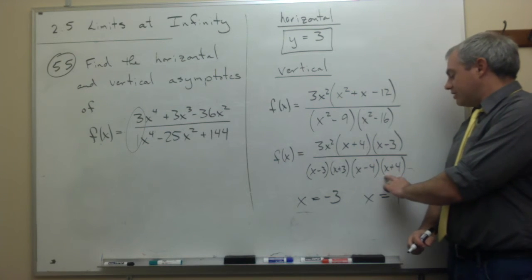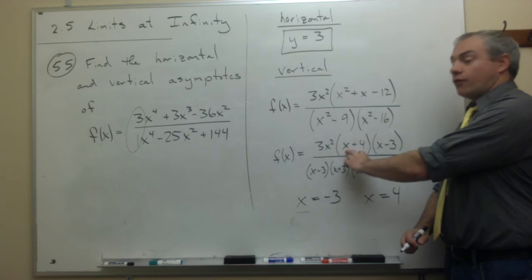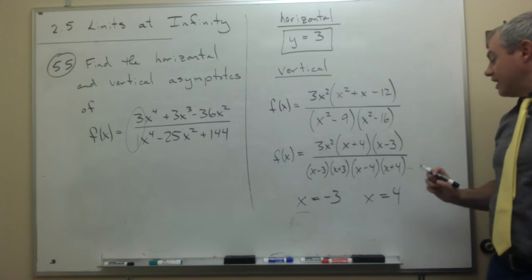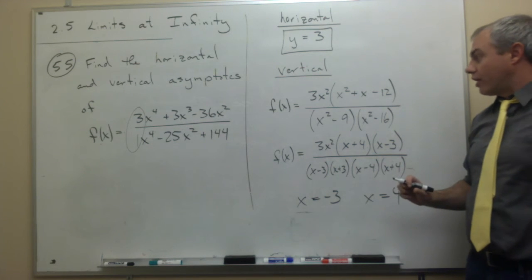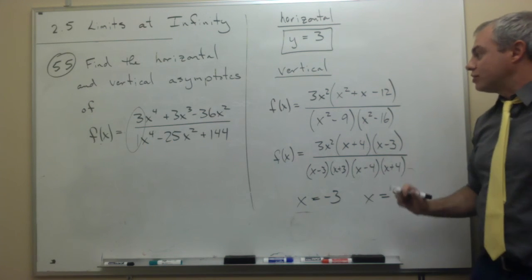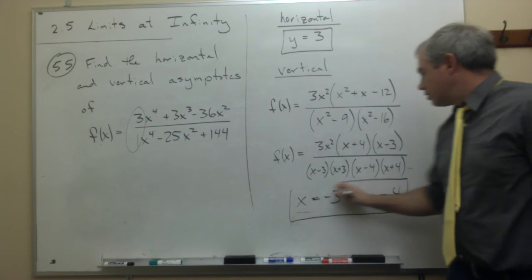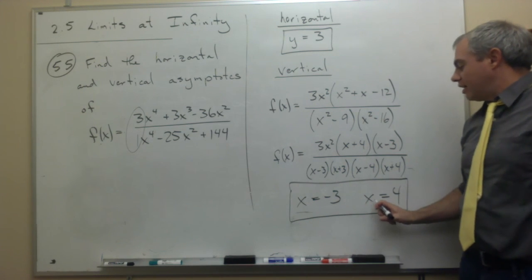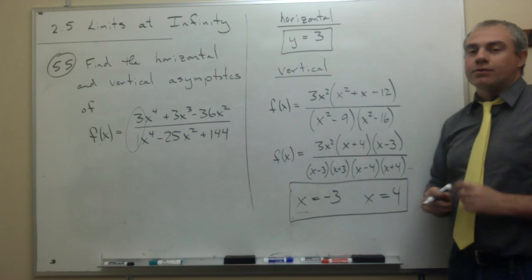And finally, what about x plus 4? Well x plus 4 also shows up on top, so at x is equal to negative 4, there's a hole in the graph. So that means I only have two vertical asymptotes. I have a vertical asymptote of x equals negative 3, and a vertical asymptote of x is equal to 4.